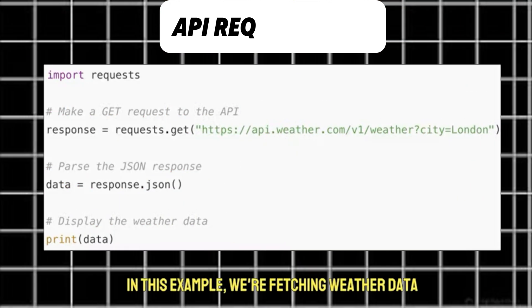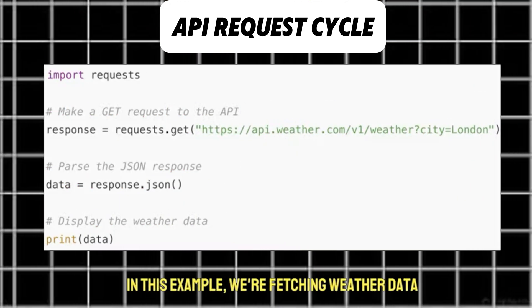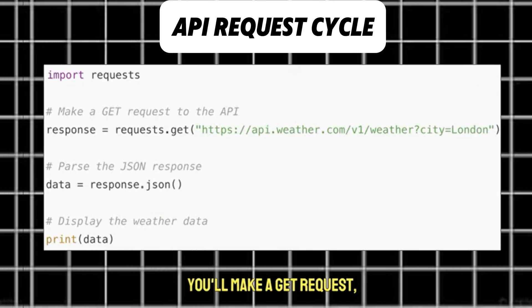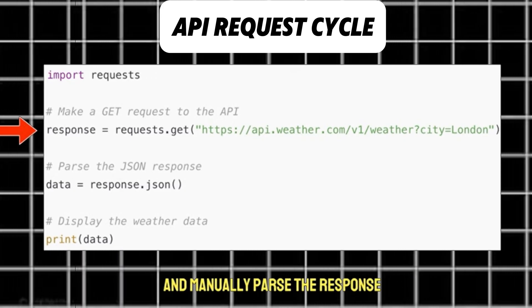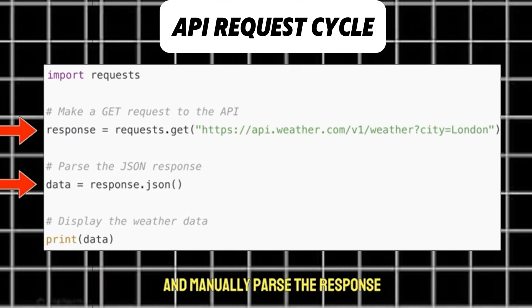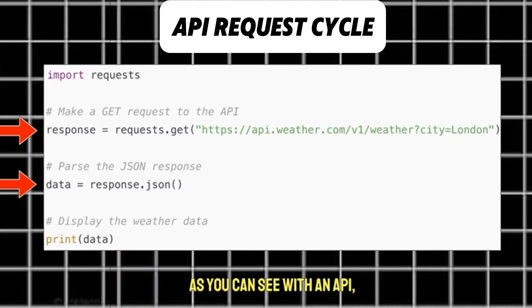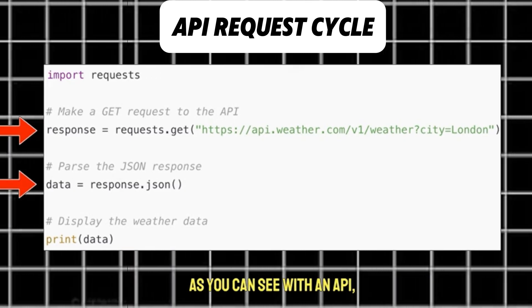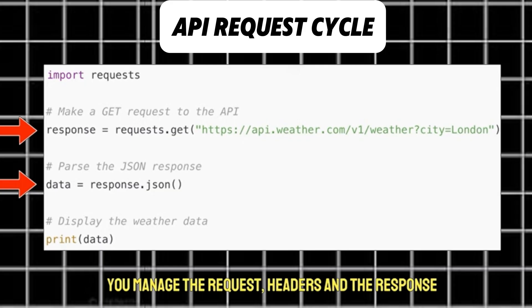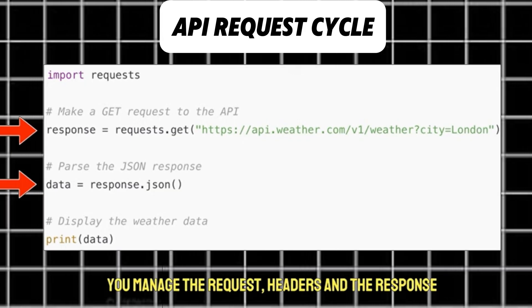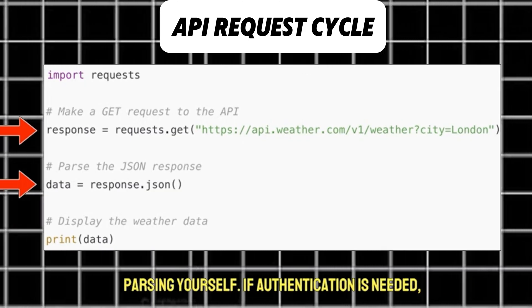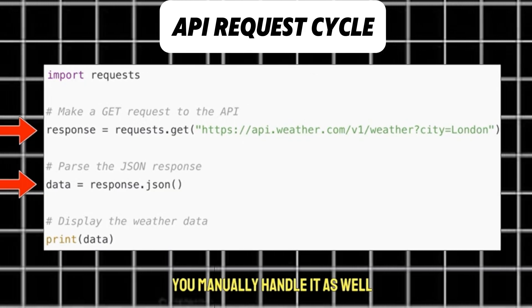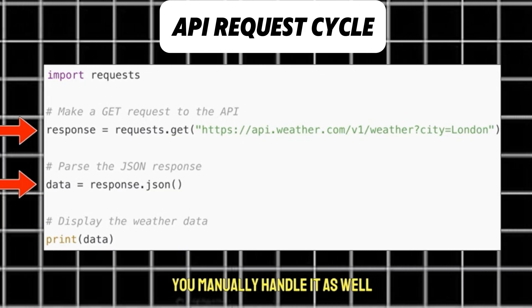In this example, we're fetching weather data. You'll make a GET request, handle authentication if required, and manually parse the response. As you can see, with an API, you manage the request, headers, and the response parsing yourself. If authentication is needed, you manually handle it as well.